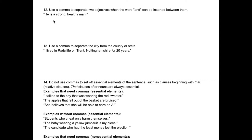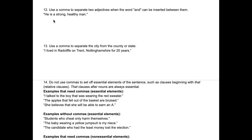Rule twelve is one my students make a lot of mistakes with. You're going to use a comma to separate two adjectives when the word "and" can be inserted between them. For example, "he is a strong and healthy man" is perfectly normal, but since the "and" isn't necessary, we replace it with a comma: "He is a strong, healthy man." If you see two adjectives next to each other, ask yourself: can I say "and"? If yes, remove "and" and put a comma instead.